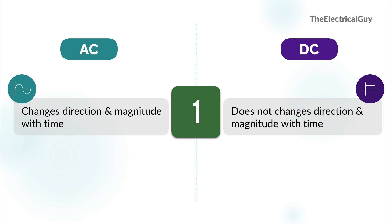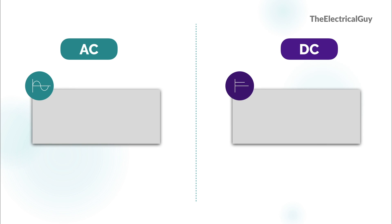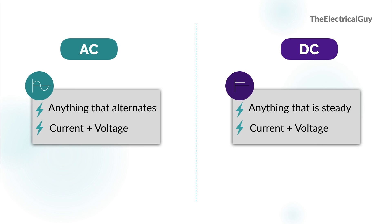One thing I would like to highlight here is that when I say AC it not only means alternating current, it also means alternating voltage. Basically AC is a common term used to indicate anything that alternates with time, which indicates voltage and current both. Similarly, when we say DC it means anything that remains steady or constant with time, which includes voltage and current both. We also say DC voltage.